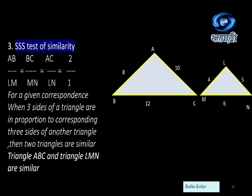For a given correspondence, when three sides of a triangle are in proportion to the corresponding three sides of another triangle, then the two triangles are similar. We can say triangle ABC and triangle LMN are similar to each other. Here again, we have to keep in mind the correct correspondence — the order has to be right. This is the third test: the side side side test.